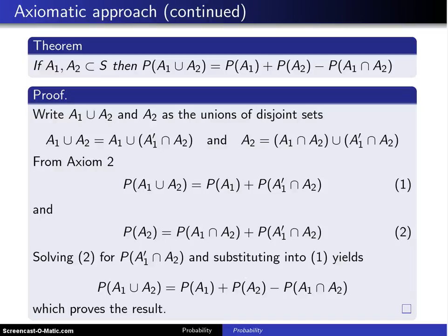Here is a third theorem that can be developed from the three probability axioms. It is as follows. If A1 and A2 are two events in the sample space S, then the probability of A1 union A2 is the probability of A1 plus the probability of A2 minus the probability of A1 intersect A2. You will find that this theorem can be used in solving a lot of probability problems.